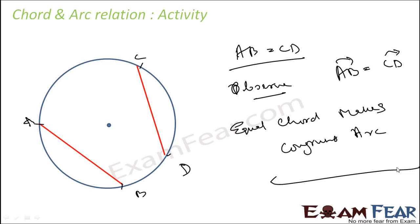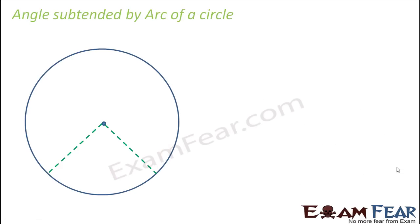And the converse is also true. Now let's understand the angle subtended by an arc of a circle. The angle subtended by the minor arc at the centre is defined as the angle subtended by the corresponding chord.